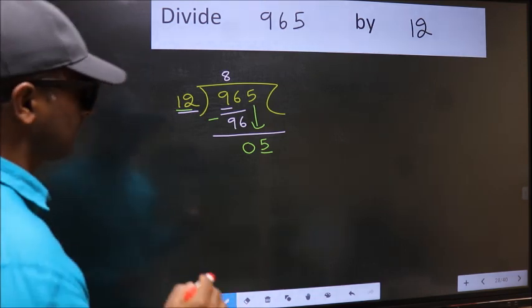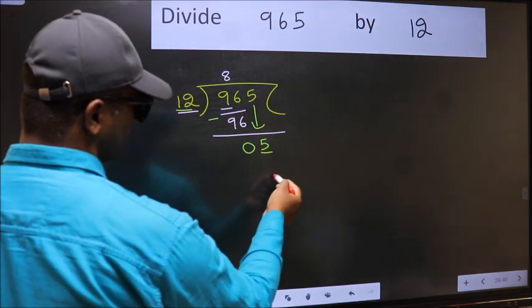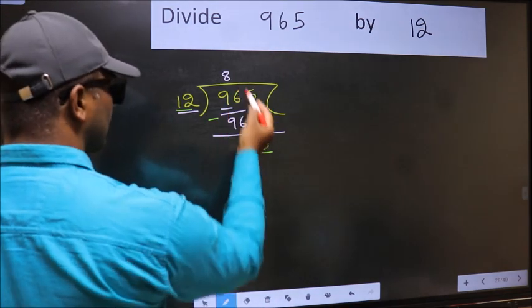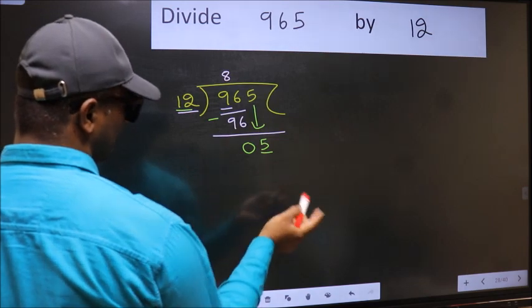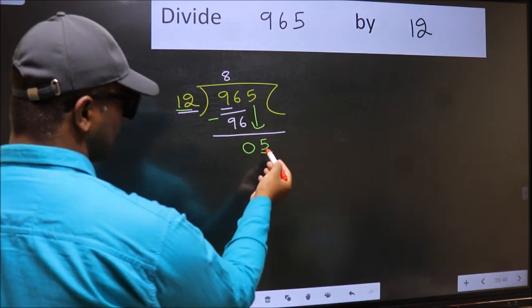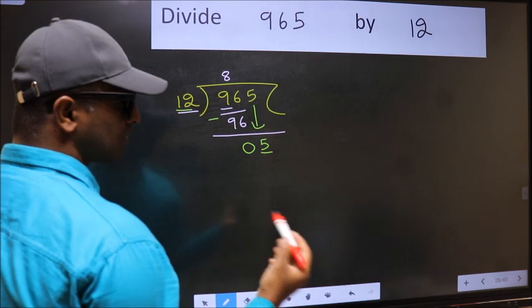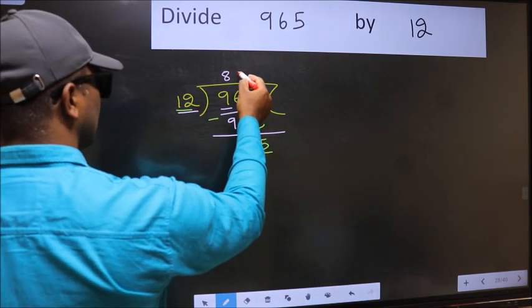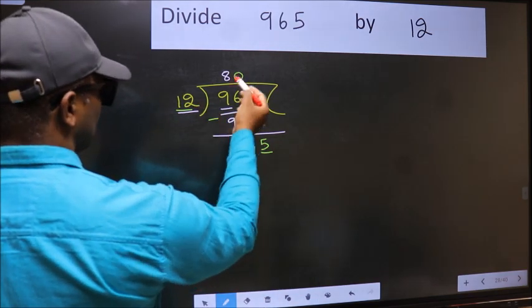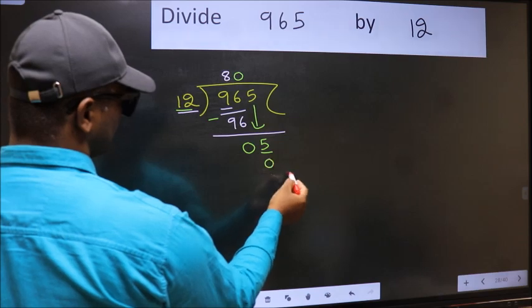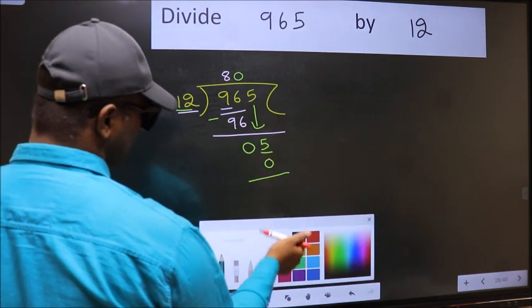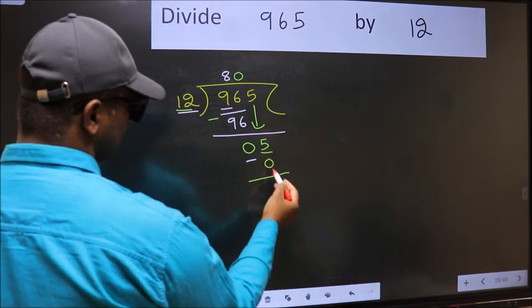Instead, what you should think of is which number should we take here. If I take 1, we will get 12, but 12 is larger than 5. So what we should do is take 0. So 12×0 is 0. Now you should subtract. 5 minus 0 is 5.